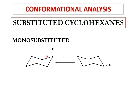We also know that these chair forms can flip from one form to another. So if we have a mono-substituted cyclohexane having X group axially oriented upwards on a carbon atom, when the ring flips, all the axial groups become equatorial. So this axially oriented X will now be equatorially oriented. One thing to notice is that this X group was axially oriented and projected upwards — when the ring flips and X is now equatorially oriented, it still is projected upwards.